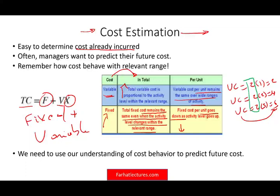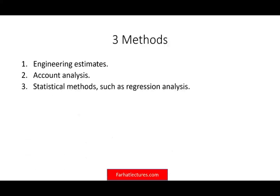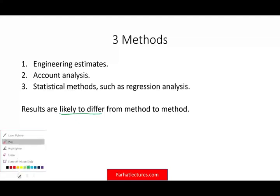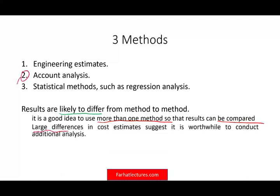We need to use this understanding to predict future costs. There are three methods to estimate future costs: one is engineering estimates, two is account analysis, and three is statistical methods including regression. Since we have three methods, results will likely differ from method to method. To have more confidence, use more than one method and compare the results. If there are large differences, you need to do more analysis and revisit your assumptions. If estimates are similar, you have more confidence in the results.